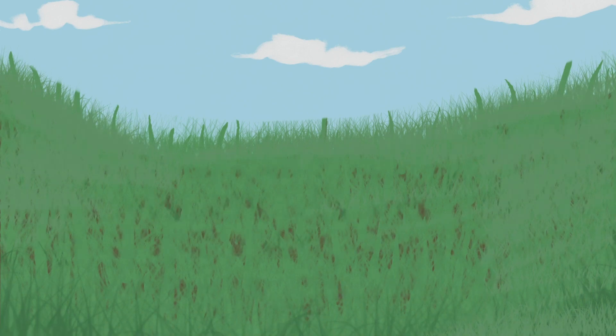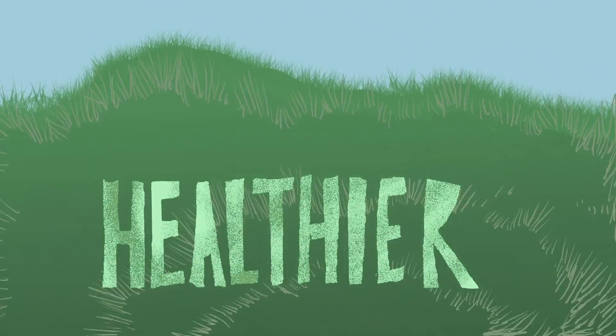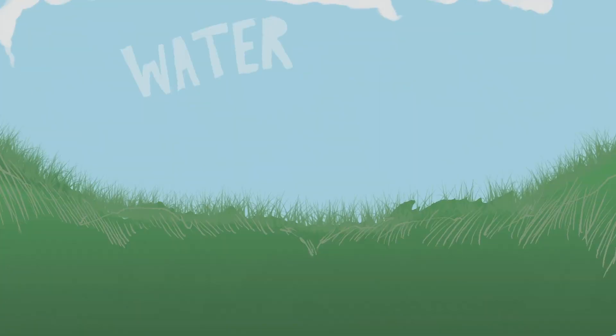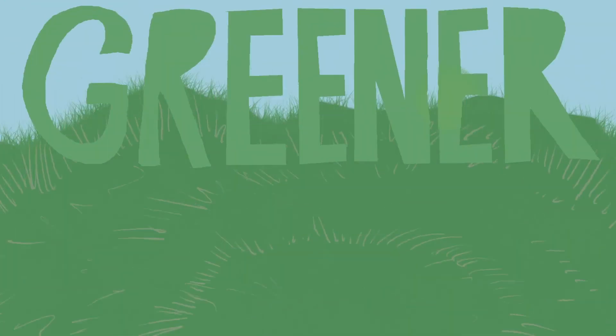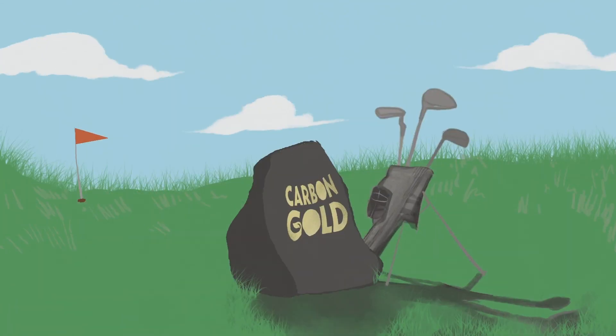A biochar foundation layer means your grass is stronger, healthier, needs less watering, and has access to more nutrients. Biochar means greener greens without the damage that comes with chemicals. And it's good for the environment too. In other words, it's carbon gold.